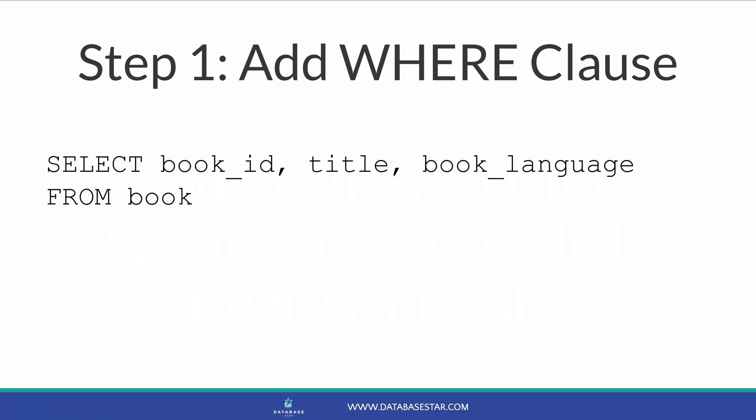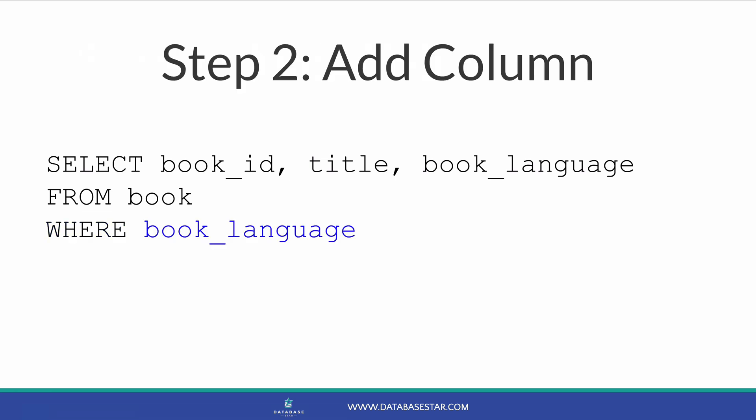Currently there is no WHERE clause, so let's add one. Here's the query with the WHERE keyword — there's no filtering happening yet. Let's say we want to show books where the language is not English. After the WHERE clause, we add the column we want to filter on. In this case, it's BOOK_LANGUAGE. So the second step is to add that column to the WHERE clause.